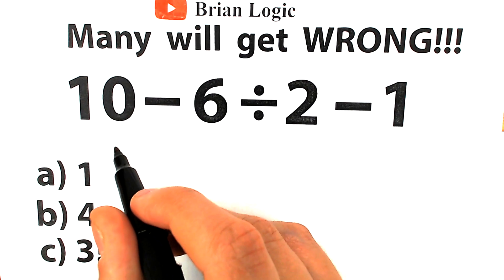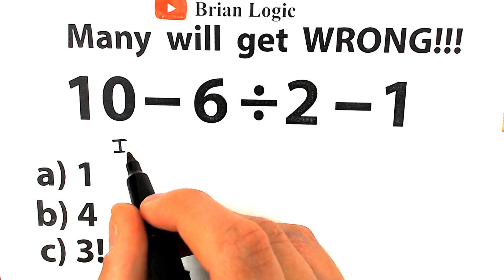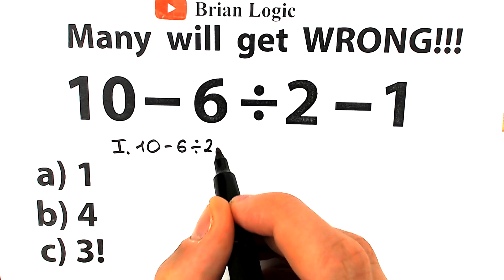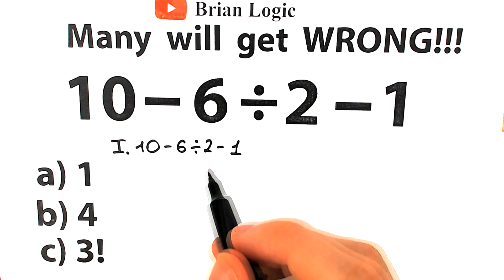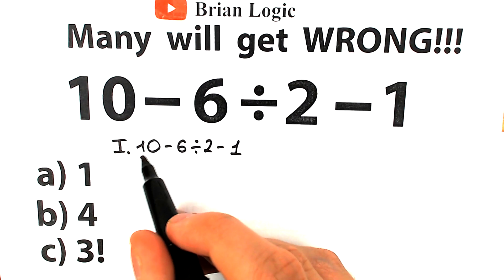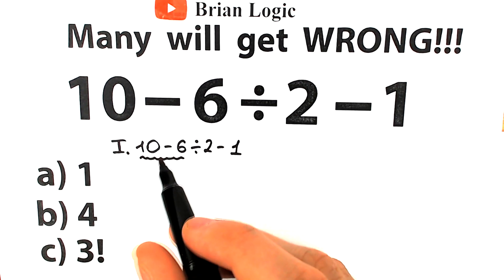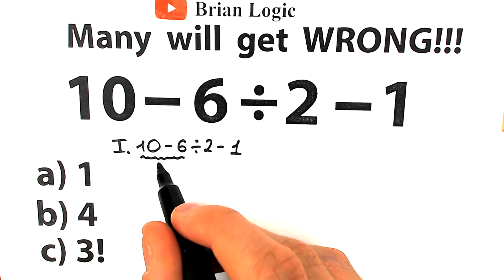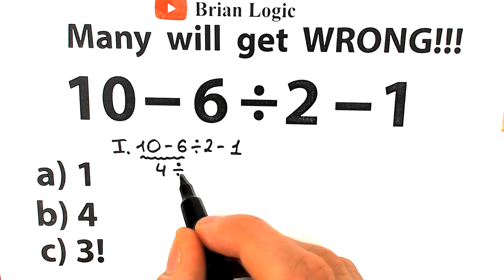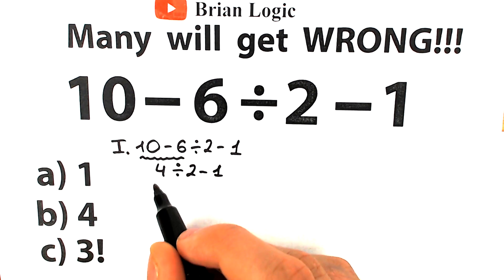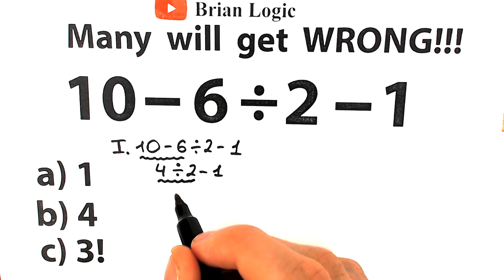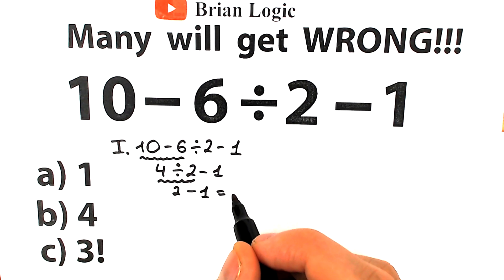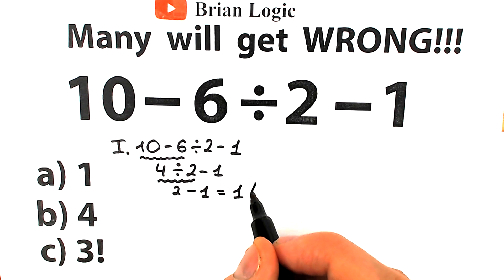Here are some expressions. First, I want to start with this first interpretation — a lot of students solve this question like that. We have 10 minus 6 divided by 2 minus 1, and they go strictly from left to right: 10 minus 6 equals 4, then 4 divided by 2 equals 2, then 2 minus 1 equals 1. It looks like the correct answer is option A.